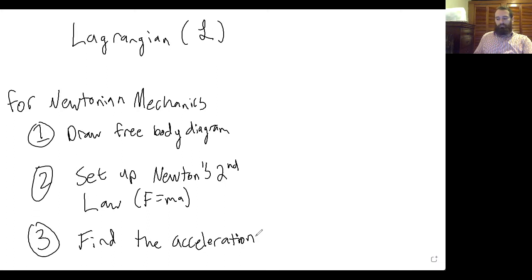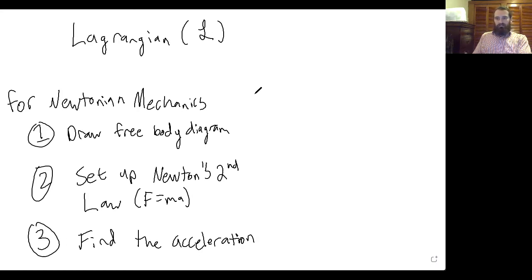Then depending on the problem, if the acceleration is constant, you can plug that into your kinematics equations and you have the equation of motion for that system. The equations of motion are just the equations that tell you what velocity and position that object will be at different times. But if you have an acceleration that isn't constant, like in a pendulum or a mass-spring system, then the equations of motion are not so simple and you would have to solve a differential equation to get those equations of motion.